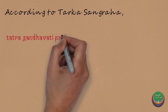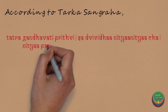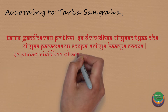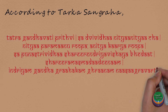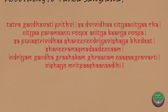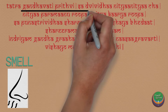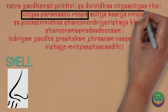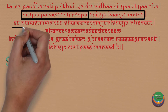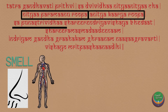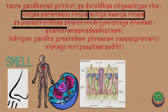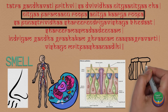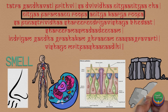According to Tarkasangraha, Prithvi Mahabhuta is that which is qualified by smell. It exists in two states: the eternal or Nithya state having Paramanu Rupa, and the perishable or Anitya state which is the Karya Rupa. The Karya Rupa exists in three forms. Parthiva Sharira is the physical body of humans and other organisms. The Indriya corresponding to Prithvi is Ghranendriya or the olfactory faculty, present at the nasal epithelium. The Vishayas or objects include all solid earthly objects like soil, stones, etc.